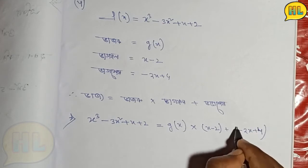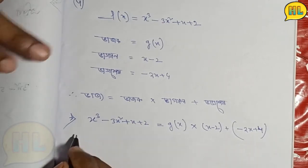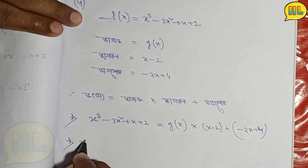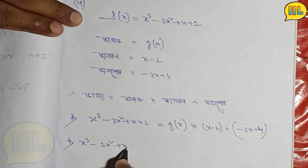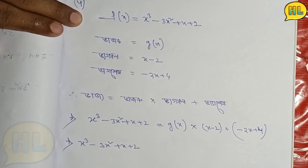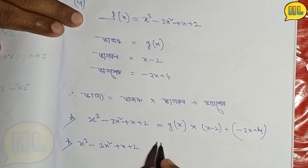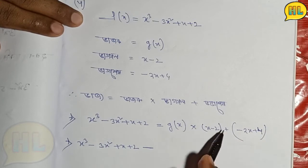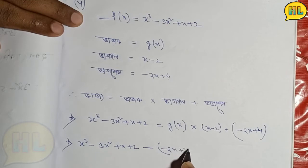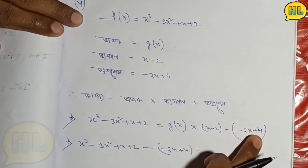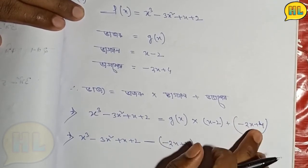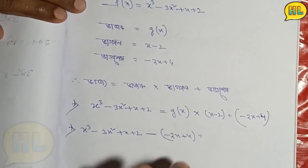It will look like x cube minus 3x square plus x plus 2. If I write it out, I have minus, we have a plus here minus 2x plus 4. Let me write it out with the regular problem.